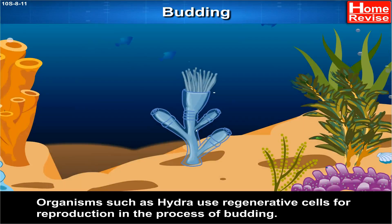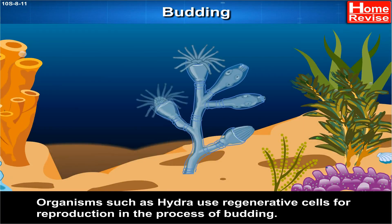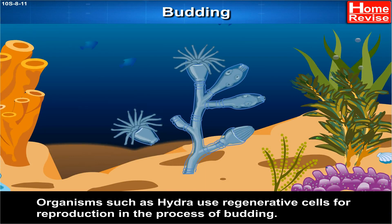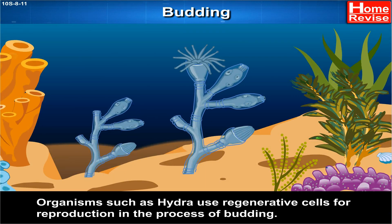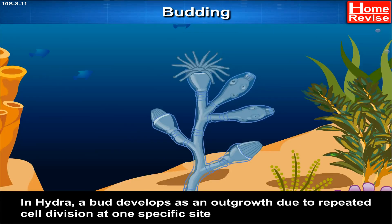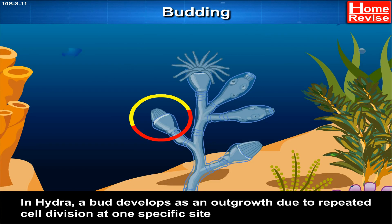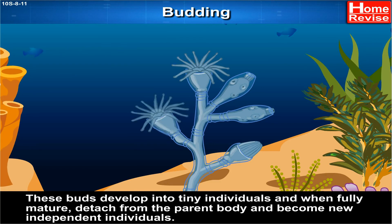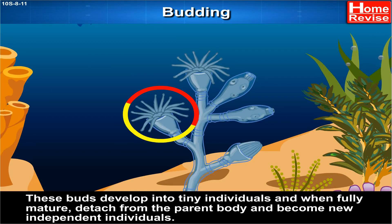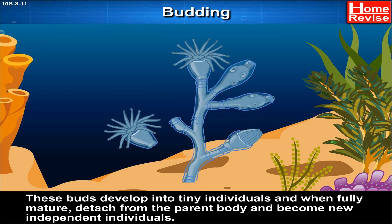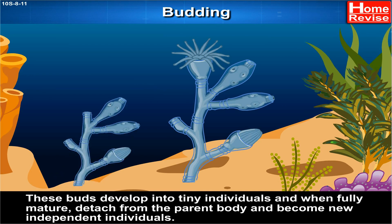Budding. Organisms such as hydra use regenerative cells for reproduction in the process of budding. In hydra, a bud develops as an outgrowth due to repeated cell division at one specific site. These buds develop into tiny individuals, and when fully mature, detach from the parent body and become new independent individuals.